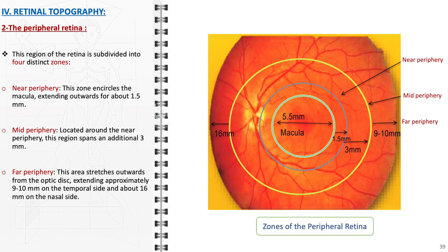3. Far periphery: this area stretches outwards from the optic disc, extending approximately 9 to 10 mm on the temporal side and about 16 mm on the nasal side. This extensive part of the peripheral retina is essential for detecting motion and providing a wide field of vision, especially important for spatial orientation and night vision.